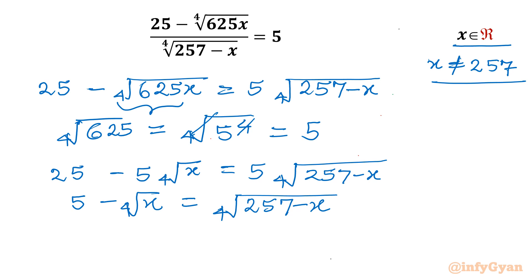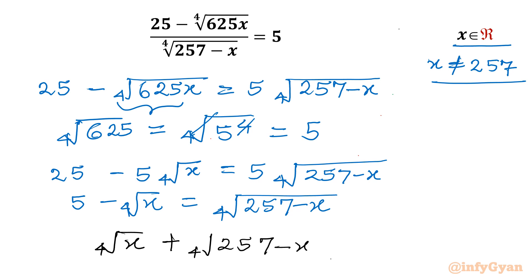Taking the 4th root of 257 minus x to the left side, we can write this equation as: the 4th root of x plus the 4th root of 257 minus x equal to 5.